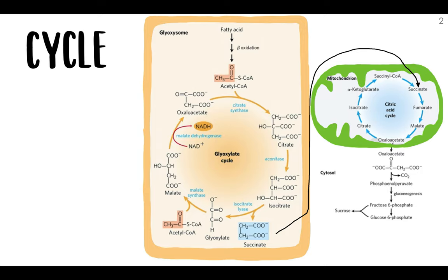Okay, let's talk numbers. Each turn of the cycle consumes two molecules of acetyl-CoA and produces one molecule of succinate, which is a four-carbon molecule. We already talked about how it's transported into the mitochondrial matrix.